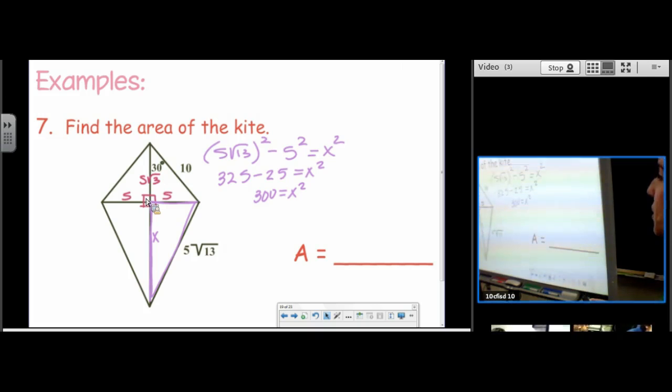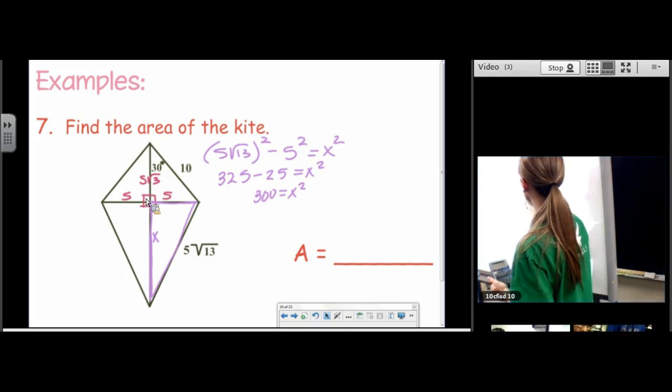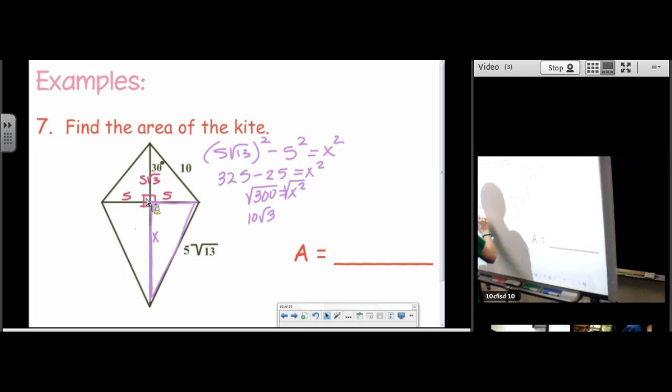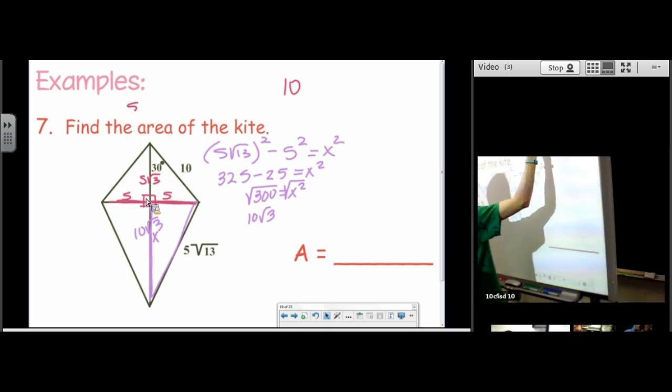Oh, this is turning out nicely. So 300 would be, what, 10 root 3. Can you square root it? So diagonal 1 is 10. And diagonal 2 is 5 root 3 plus 10 root 3. So diagonal 2 is 15 root 3.